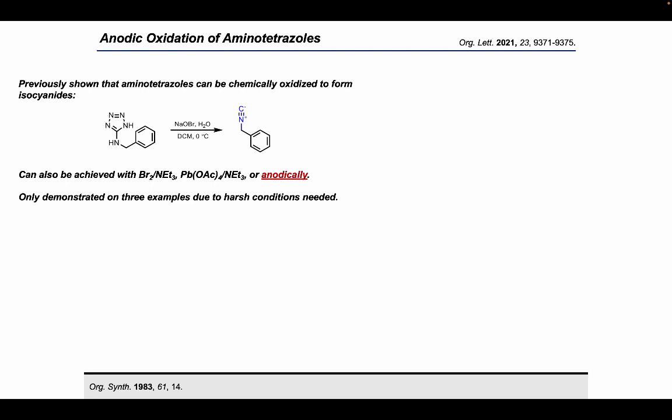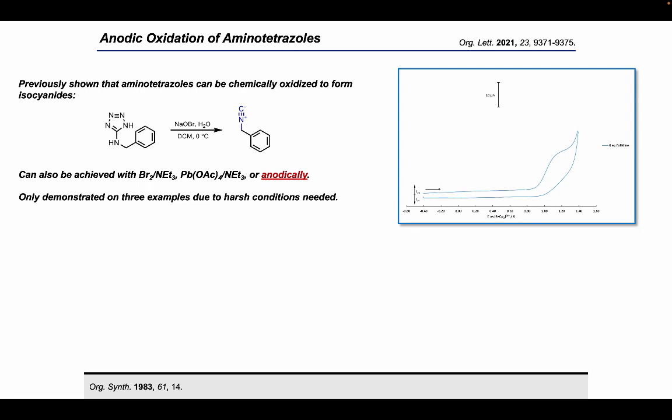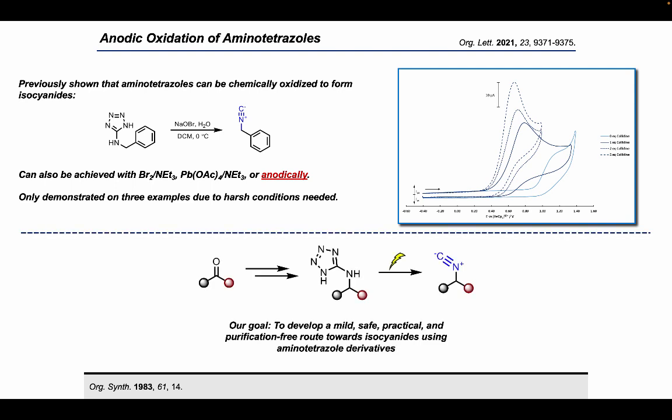So our first thought was to have a look at some of these compounds using cyclic voltammetry. So if you look here at the cyclic voltammogram of one of our aminotetrazoles, with no equivalents of collidine, what you actually see is a single chemically non-reversible oxidative event at around 1.1 volts versus ferrocene. It was also necessary to polish the electrodes between scans because there was a rather large amount of electrode fouling, which hindered further studies. However, upon adding one equivalent of collidine, you actually see a shift to a lower potential of about 0.8 volts versus ferrocene. And this is presumably due to the formation of the anion. And then as you add additional equivalents of base, you end up with complete suppression of any electrode fouling and a further shift of this oxidative process to lower potentials.